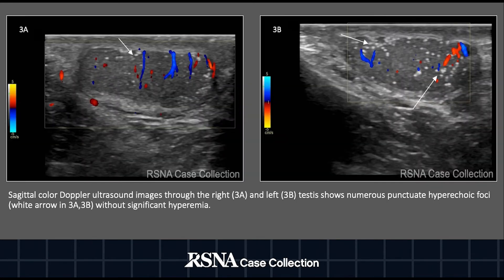Subsequent sagittal Doppler ultrasound images demonstrated normal parenchymal blood flow to the testes without any hyperemia. Again, the diffuse hyperechoic foci are denoted by the white arrows in figures 3a and 3b.